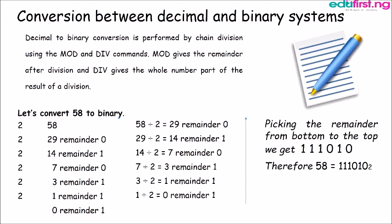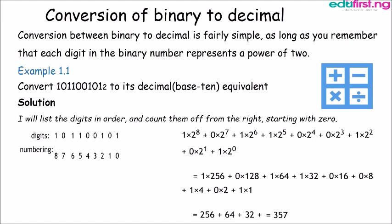Conversion between binary to decimal is fairly simple as long as you remember that each digit in the binary number represents a power of 2. Now we have another example. First thing we do to convert this binary number to its decimal equivalent is we list the digits in order and count them off from right starting with 0.